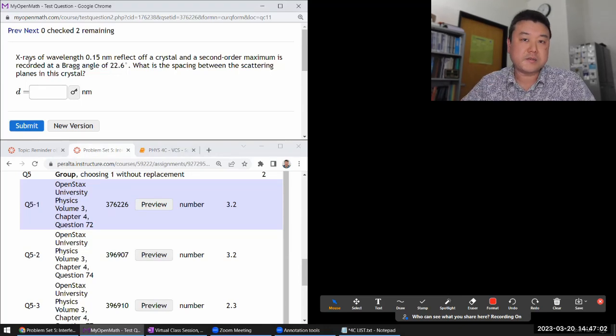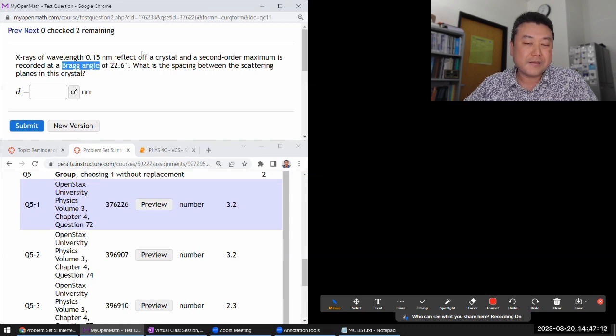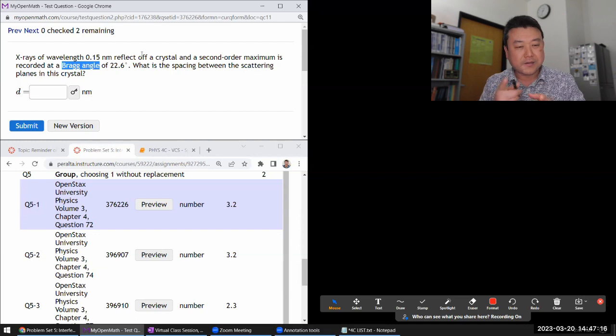So this question is asking about x-rays of some wavelength reflecting off a crystal at a second-order maximum. And this is the keyword: the Bragg angle. And my apologies, there's a lecture video where I did cover this. I meant to move it up.